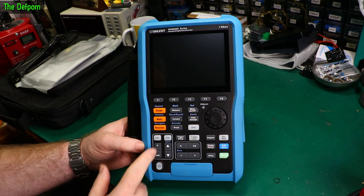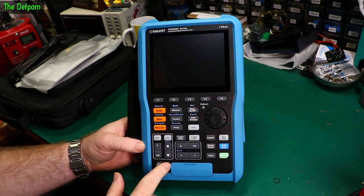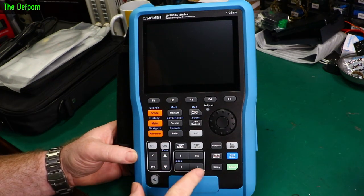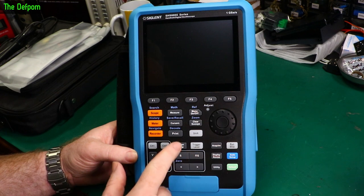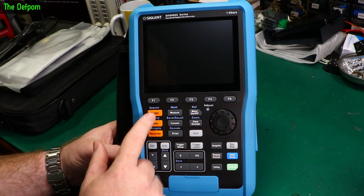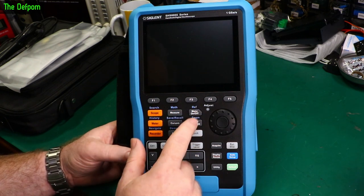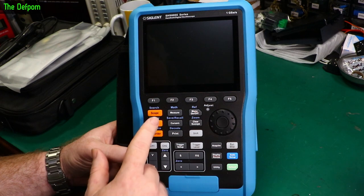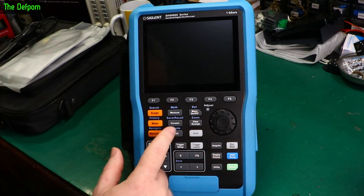So that actually means you can do data logging on it over a period of time. There are some settings in that I believe. Channel 1, channel 2 controls. So we've got vertical and horizontal controls here. Trigger button. Trigger level setting. Shift button here for doing the second functions of these buttons. Zoom, reference, math, save, recall, history, decoding. It's got a decoding button as well.